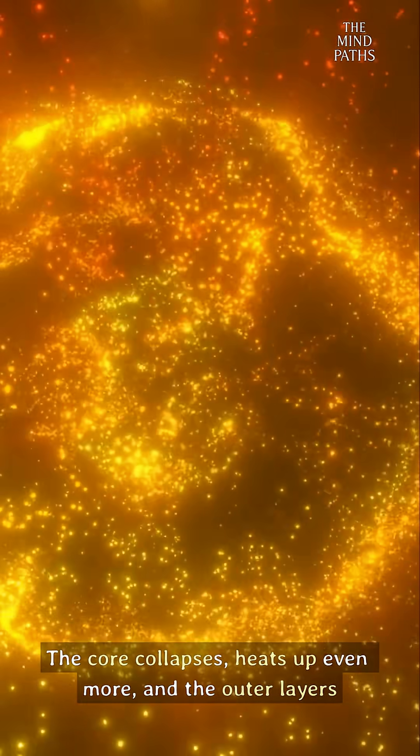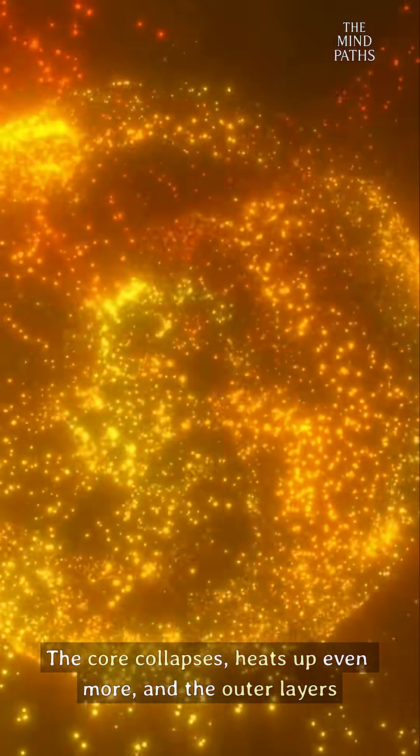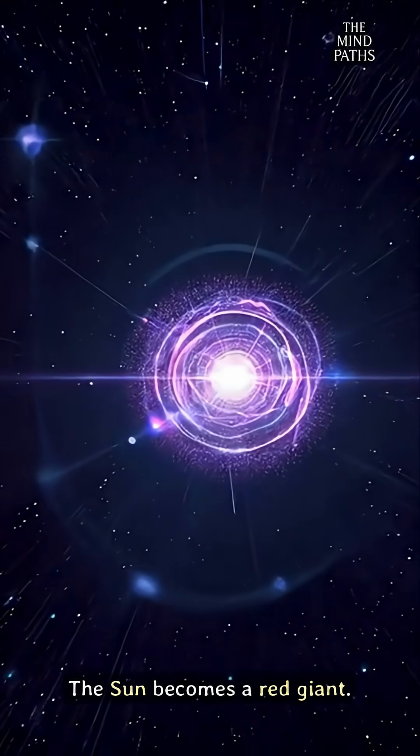The core collapses, heats up even more, and the outer layers swell outward. The sun becomes a red giant.